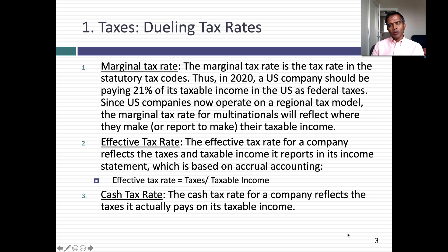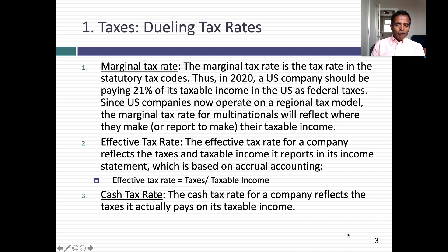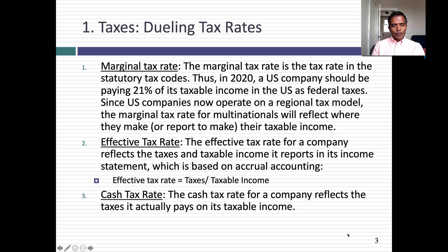So all U.S. companies have to pay that, right? Not necessarily. If you're a multinational, you make your income in multiple countries — you get taxed where you make your income, not where you're incorporated. You might have to care about the marginal tax rates in those countries as well. The effective tax rate is the rate closest to the accountant's heart. Here's how it's computed: you go to the income statement, take the tax line item, divide by the taxable income, and you get an effective tax rate.